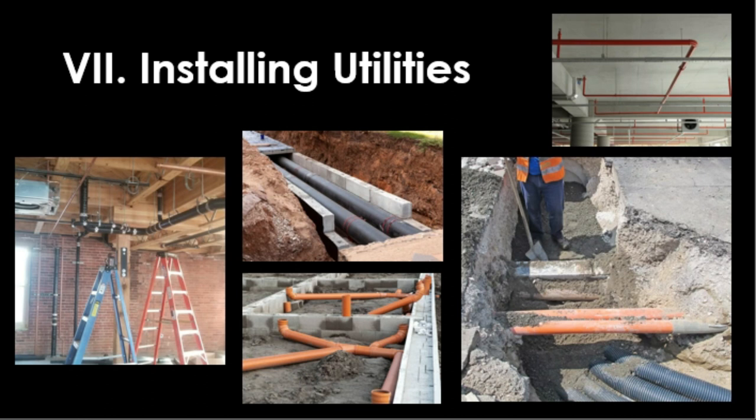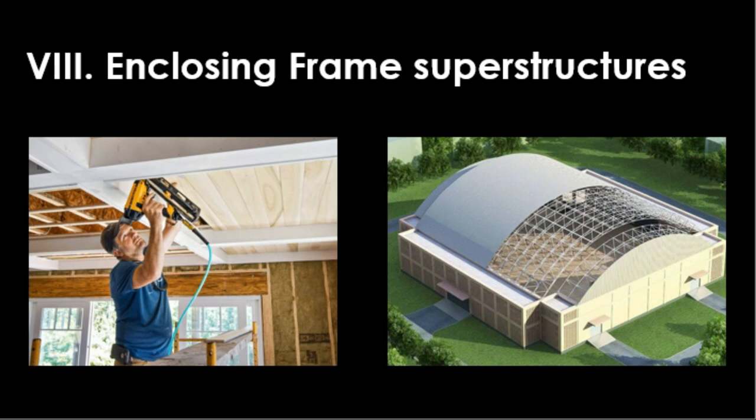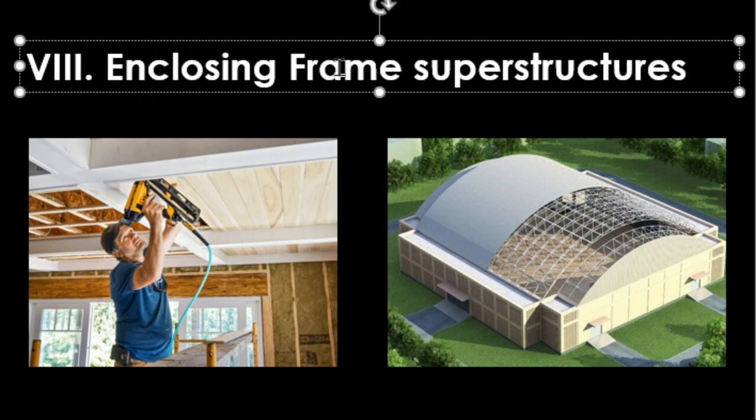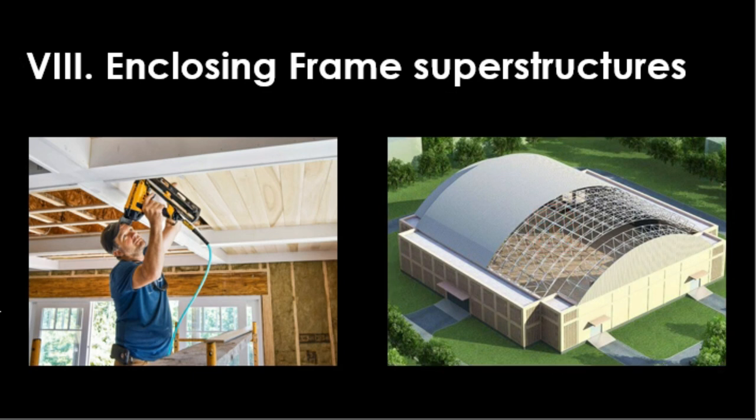For enclosing the frame structure, some kinds of structures are usually left uncovered — for example, bridges, roads, dams, and utility towers. Most buildings and some towers are wholly or partly enclosed. This refers chiefly to buildings which have a framed or skeleton-type superstructure that needs to be enclosed.